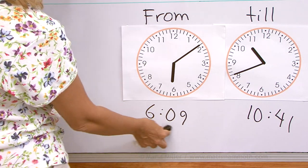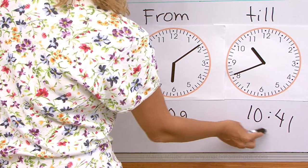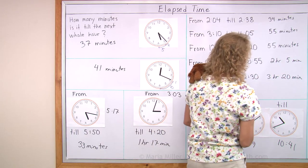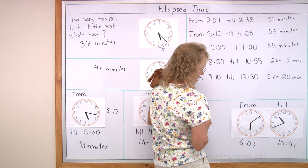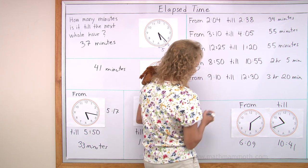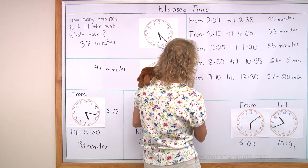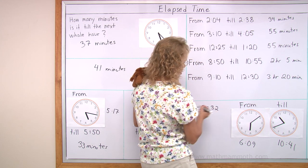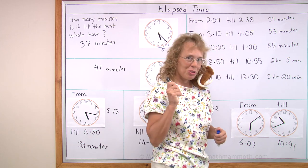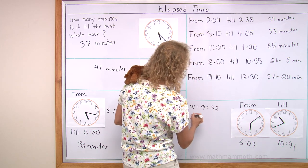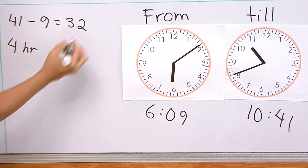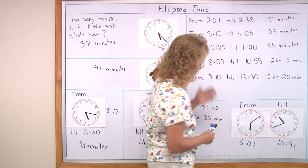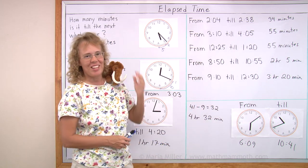When we go from 6:09 till 10:09, that would be exactly four hours. So this is more than four hours. And then we can subtract the minutes. 41 minus 9 equals 32. So what do you get? You should get four hours and 32 minutes. I hope you got the same.